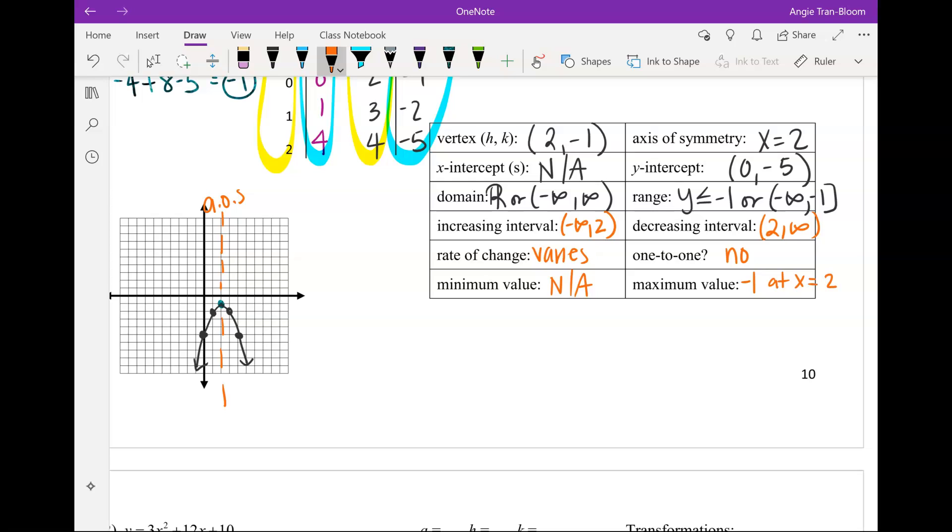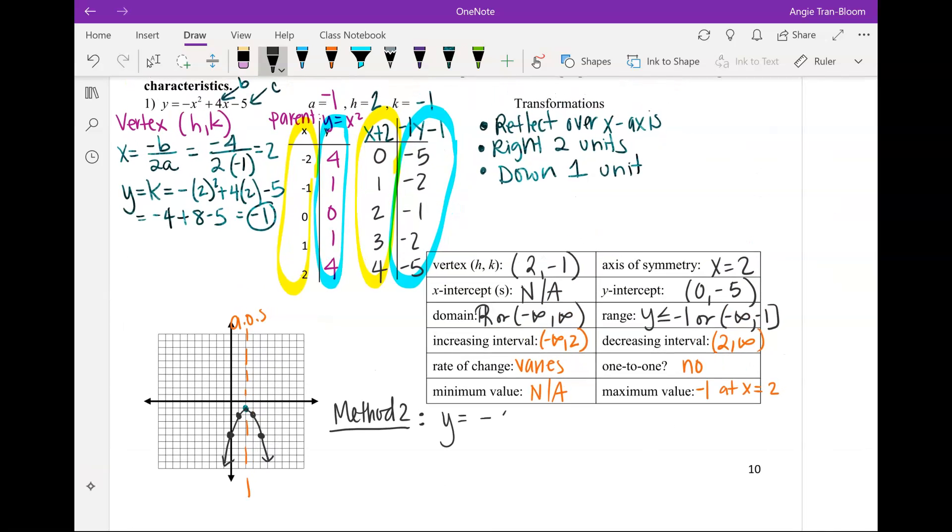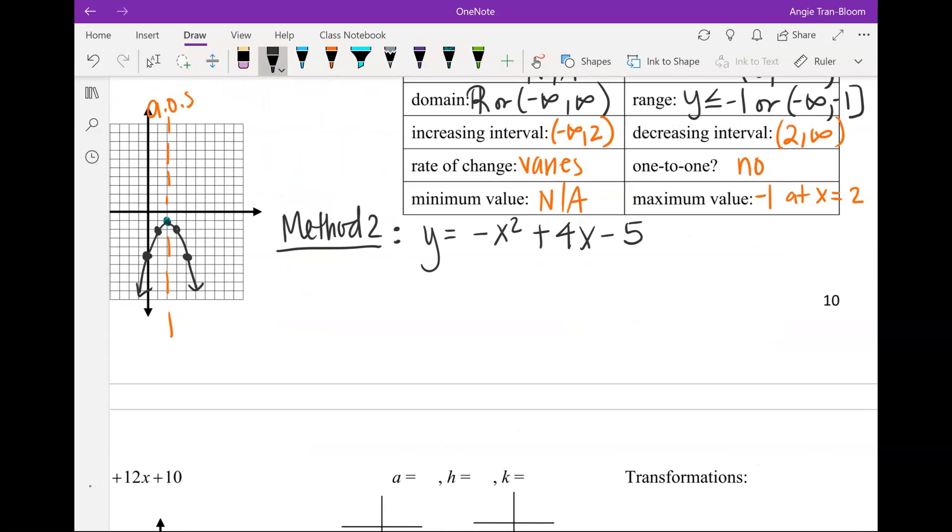That's method number one. Method number one, how do we find h and k again? Using x equals negative b over 2a. Now method number two - this one I don't know if you like it better or not, but we're going to put it right here on the bottom. Method number two, again I'm going to copy down the question: y equals negative x squared plus 4x minus 5. Method number two does not change your a, h, and k at all. It's just a different way to get those. a value would still be the same, so method one and two are just two different ways to obtain your h and k value. Method number two will ask you to complete a square.